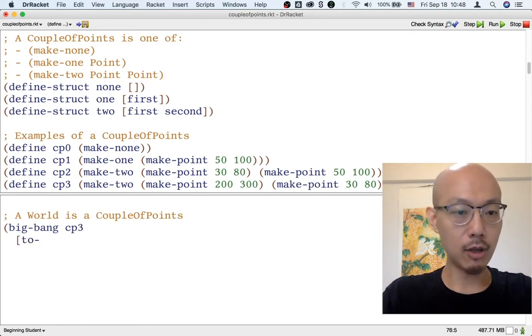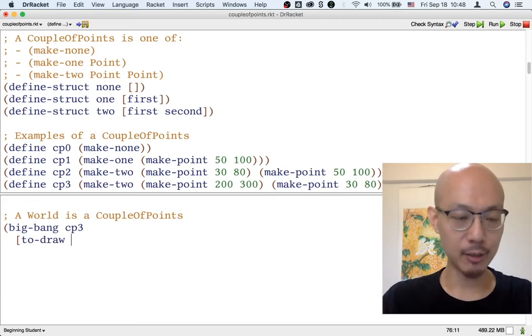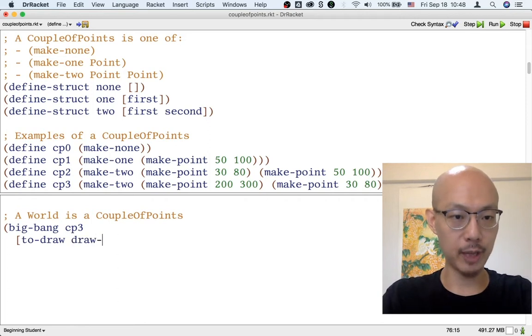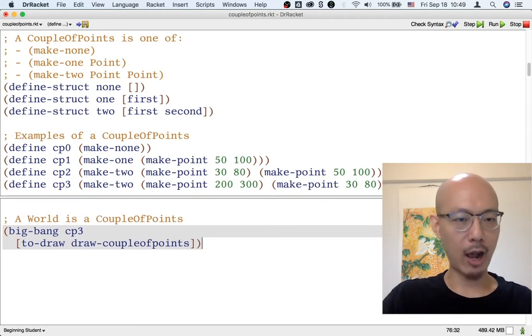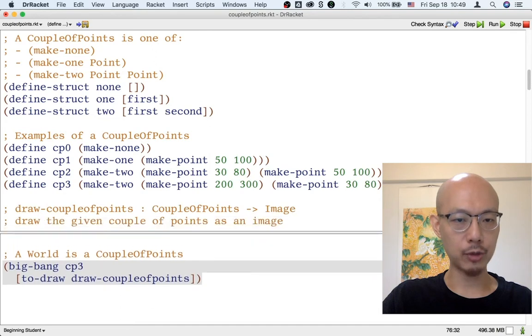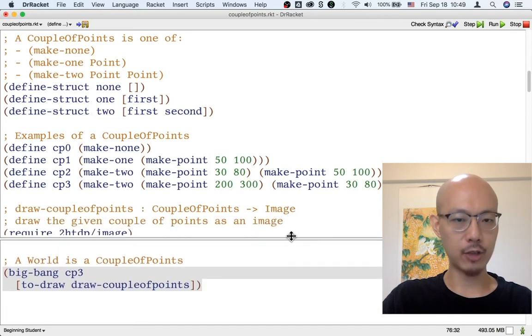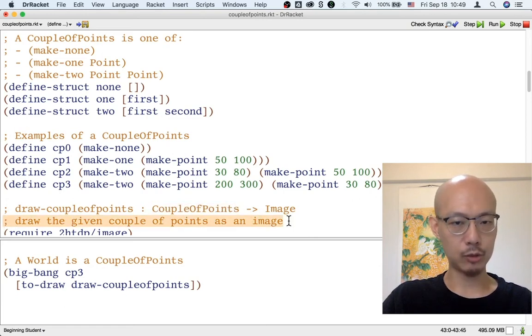Now, all we have to give is a function for drawing a couple of points, and we have that. It's called drawCouplePoints. We don't really need to worry here about how the function works. All we have to worry about is that the function has the right signature. It takes a world and returns an image, and it has the right purpose.